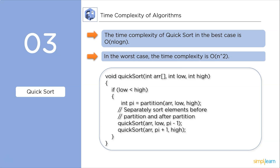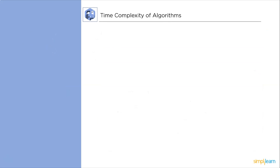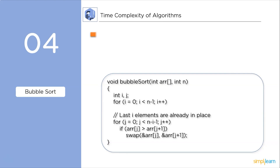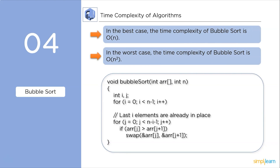Next up, bubble sort. As you can see in this code, we are using nested loops. So in the worst case, its complexity comes out to be O(n²). In the best case scenario, the time complexity will become linear time complexity, that is O(n).